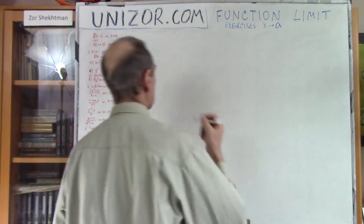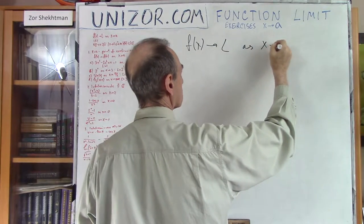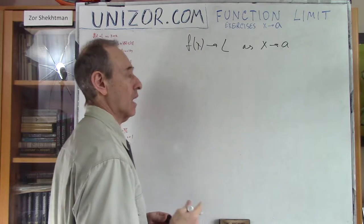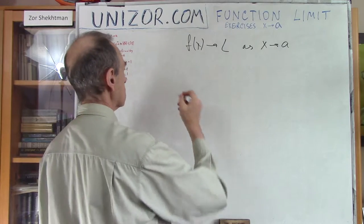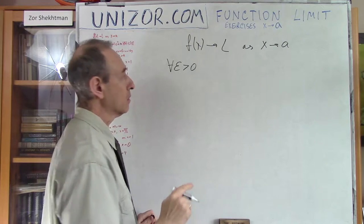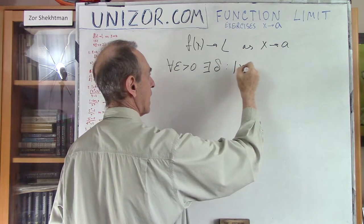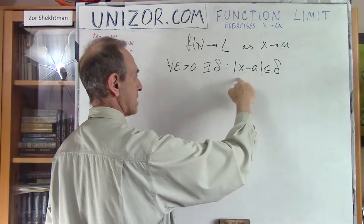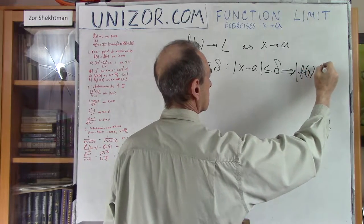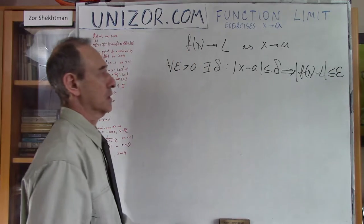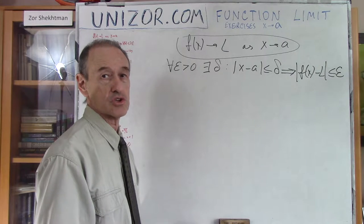What are we considering right now? We are considering the fact that the function f(x) should go to some limit L as its argument goes to some real number A. Using the epsilon-delta language: for any positive epsilon, however small, we can always find a delta neighborhood of A such that if x is within this delta neighborhood — the absolute value of the difference is less than delta — then f(x) would be in the epsilon neighborhood of its limit L. This is the exact mathematical definition of the limit.